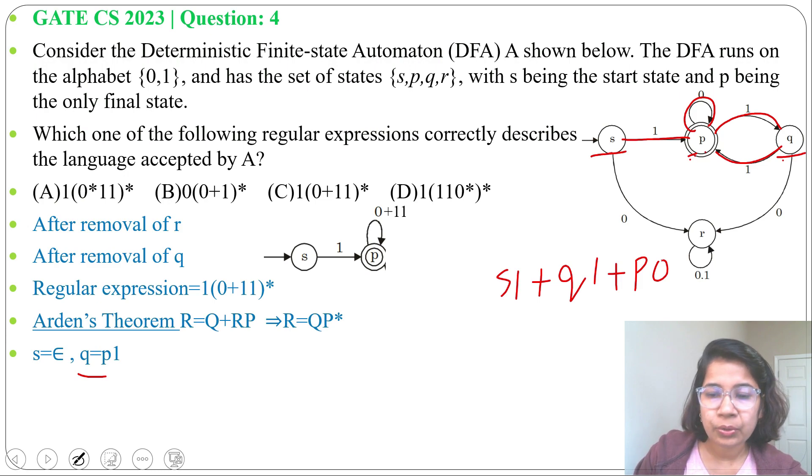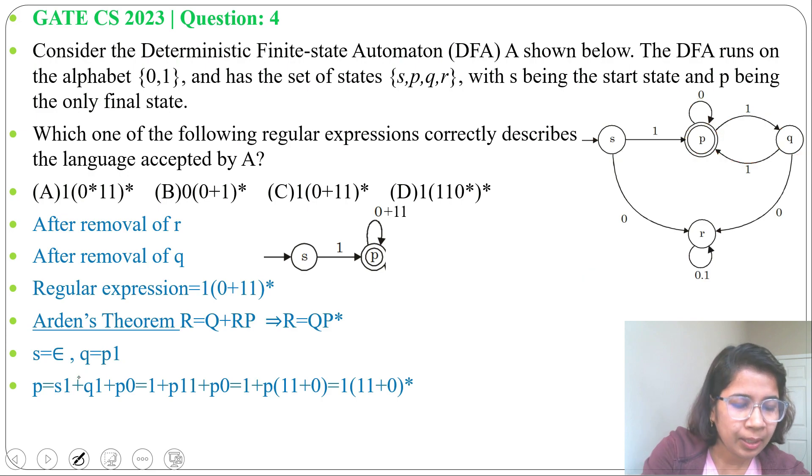P equals S1 + Q1 + P0. Now in place of S substitute epsilon, and in place of Q substitute P1. After substitution it will be P11, then before 1 another 1 was there, so P11 plus P0.